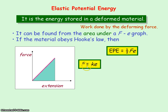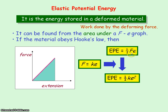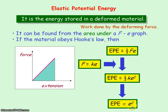Because the material obeys Hooke's law, we know the force equals the force constant times extension, F = ke. Substituting for force gives ½ke × e, which equals ½ke². As k is a constant for a given spring, the elastic potential energy is directly proportional to the extension squared. This means that if you double the extension, you get 2 squared — so 4 times the elastic potential energy. If you have 3 times the extension, you get 3 squared — so 9 times the elastic potential energy.